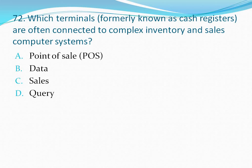Question number 72: Which terminals, formerly known as cash registers, are often connected to complex inventory and sales computer systems? The correct answer is option A — Point of Sale (POS).